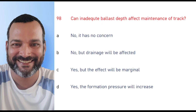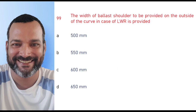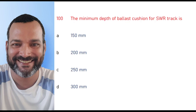Can inadequate ballast depth affect maintenance of track? The right option is yes — the formation pressure will increase. The width of ballast shoulder to be provided on the outside of a curve in case of LWR is 500 mm. The minimum depth of ballast cushion for SWR track is 250 mm.